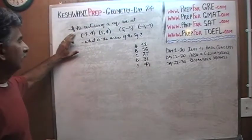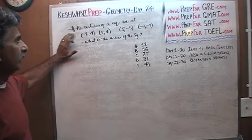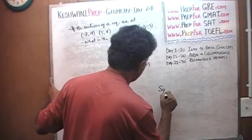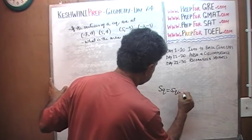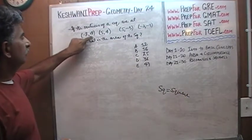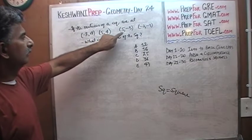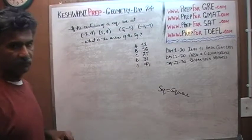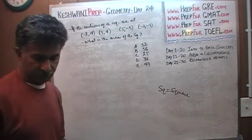It says if the vertices of a square are at negative 2, 4, 5, 4, 5, negative 3, then negative 2 and negative 3, the question simply is, what's the area of such a square?